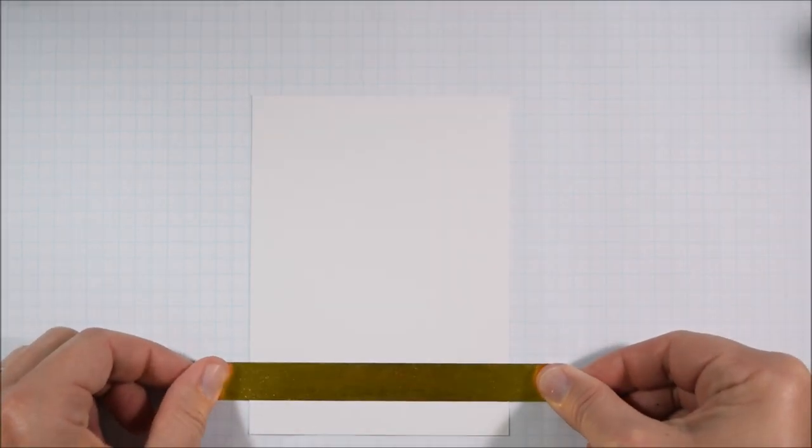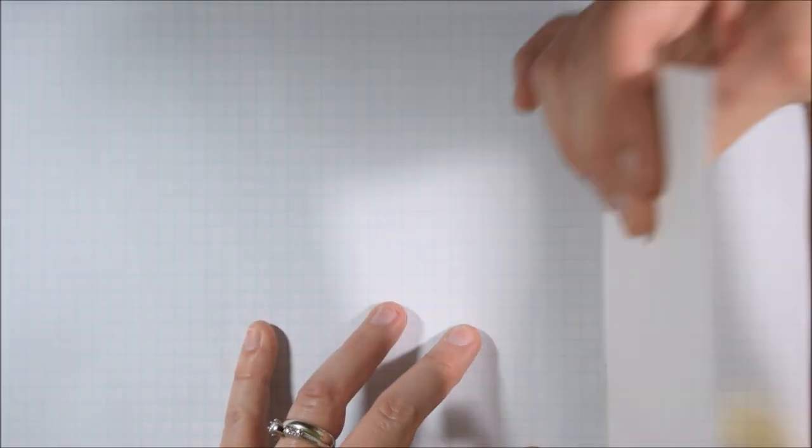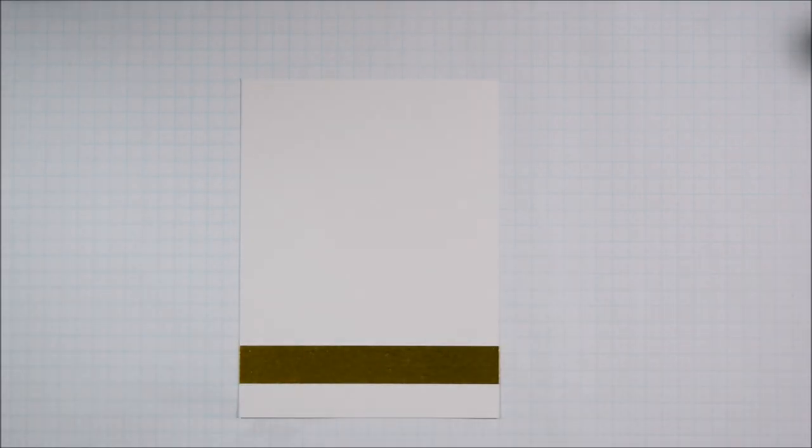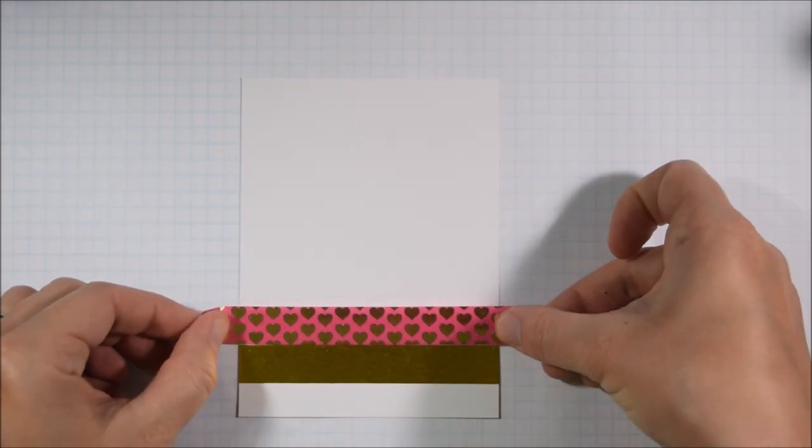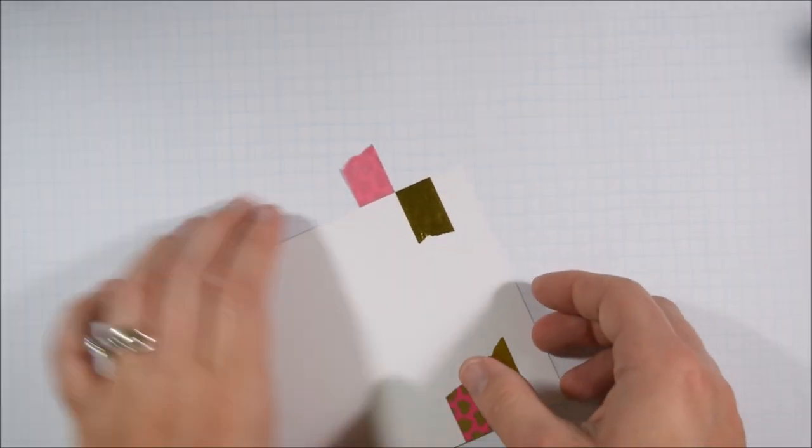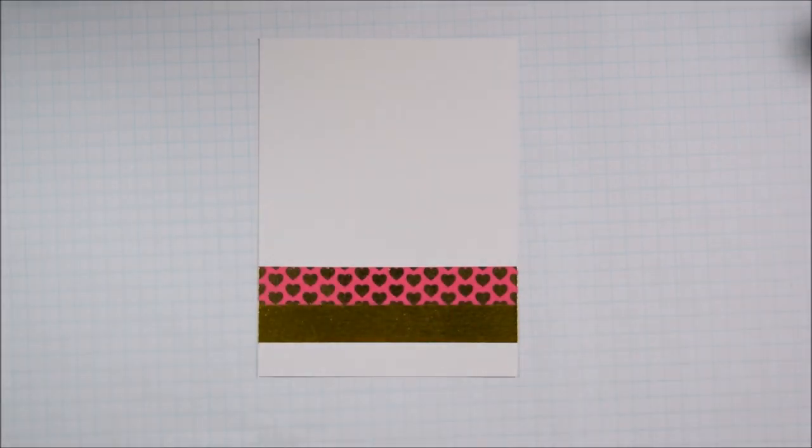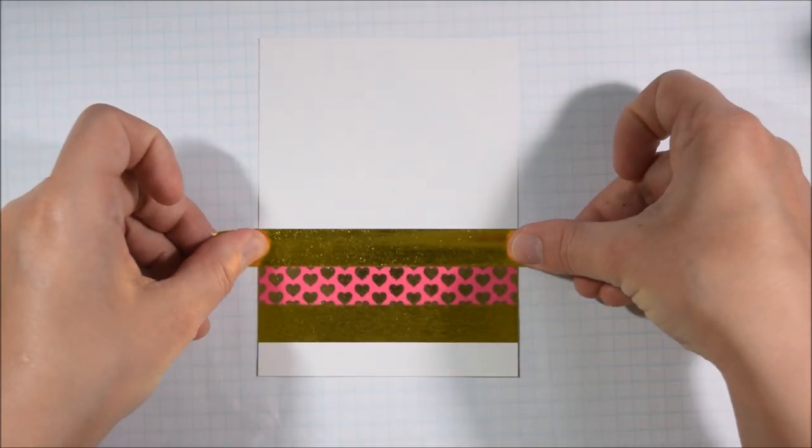I think that overall this technique works really well with solid colors or using solid colors mixed with patterns, and that's what I'm going to do on the second one here. I think that most of us probably have more patterned washi than solid washis, so I am using a gold with a heart pattern that also has gold in it and I'm basically going to create a piece of patterned paper this second time.